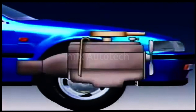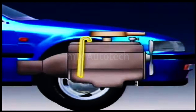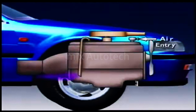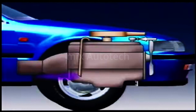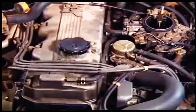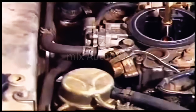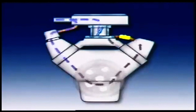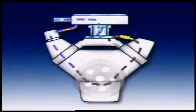In older vehicles, crankcase vapors were vented directly to the atmosphere through a breather tube or road drop tube, shaped to help draw vapors from the crankcase as the vehicle was being driven. Modern vehicles are required to direct crankcase breather gases and vapors back into the inlet system to be burned. A common method is called positive crankcase ventilation, or PCV. A PCV valve regulates gas flow between the crankcase and the inlet manifold.